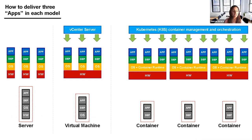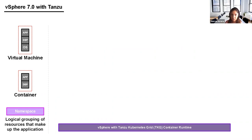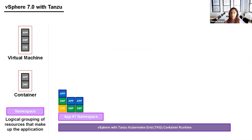The challenge with so many containers is managing them. Just like vCenter Server manages virtual machines, to manage and orchestrate containers we have something called Kubernetes. Before handing to Joe, I'll quickly cover where VMware fits in. To build a modern application platform we have virtual machines, containers, and something called a namespace — a logical grouping of resources that make up a particular application.